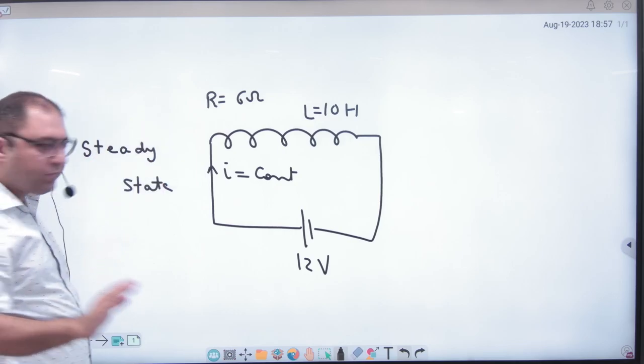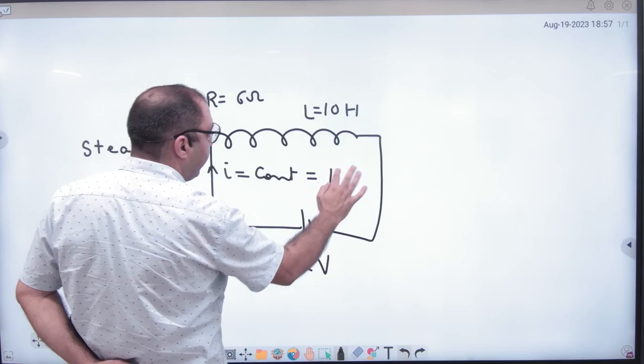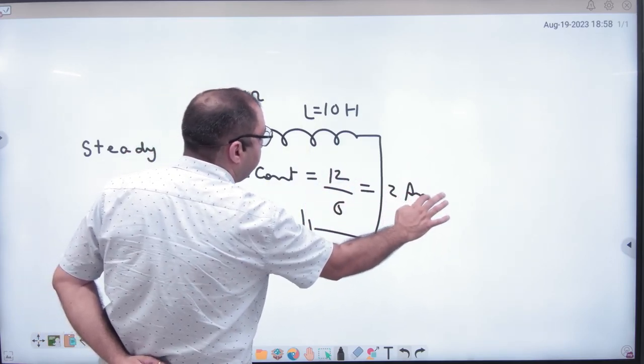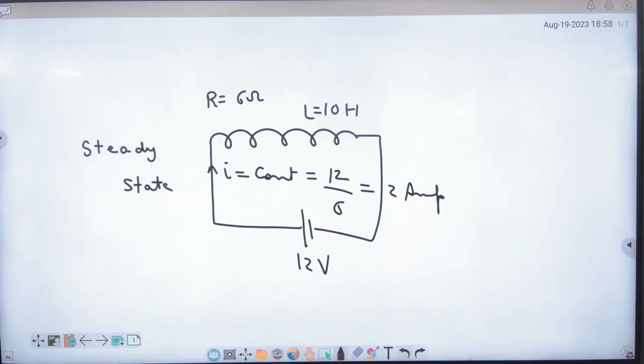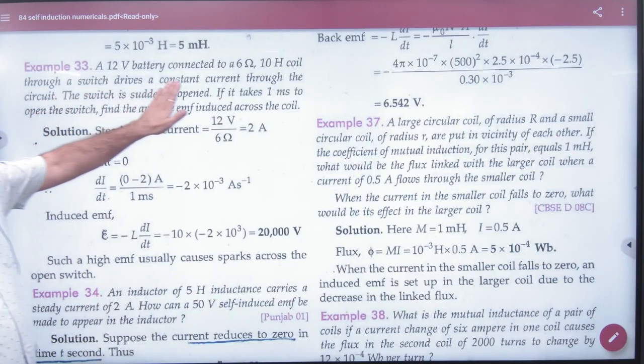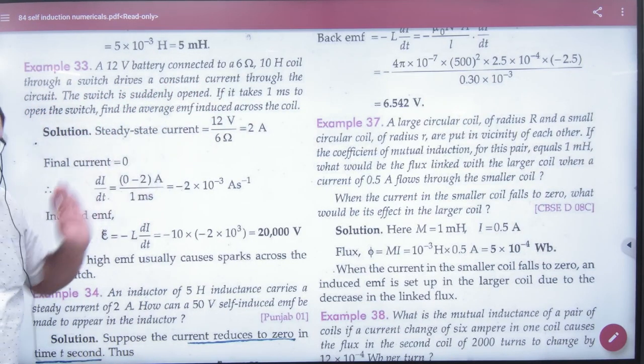Battery current is going constant. Does the inductor have any role? No. So if I ask what is the current, you can divide by the resistance 6 to get the answer: 2 ampere. So 2 ampere current is flowing. Is this understood so far? Inductor has no role because constant current. The first line is saying inductor has no role because of constant current.